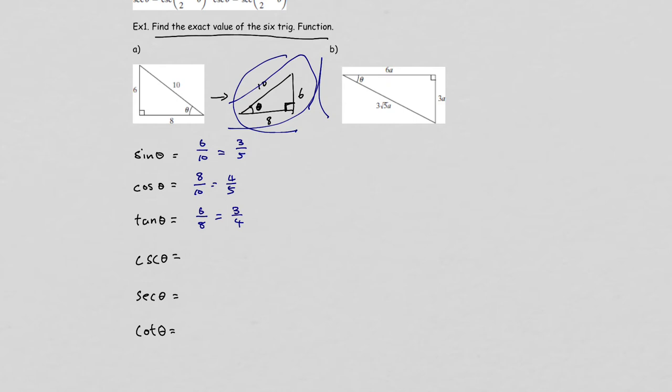Once you have these three trig functions, the other three are just flipping them. Cosecant is the flip of sine. Secant is the flip of cosine. And cotangent is the flip of tangent. That's how you find all six trig function values.